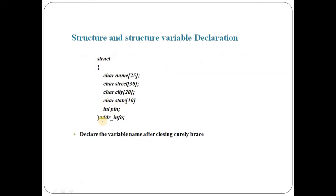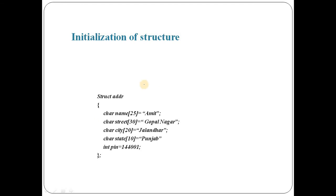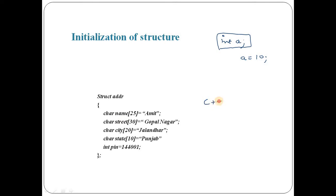We can also define the structure variable after the curly braces and before the semicolon. Now, initialization: a variable is declared like we write integer a, and after declaration we initialize the variable by putting values into it. Similarly, if we want to put some values in the members of the structure, that is called initialization. However, C++ does not allow you to initialize a structure at the time of declaration.